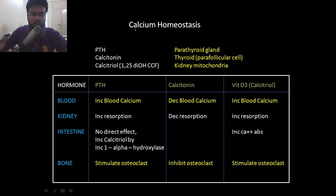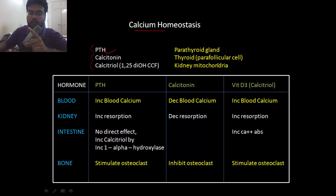Next is calcium homeostasis. Here are the hormones and their sources of secretion: parathyroid hormone from the parathyroid gland, calcitonin from the parafollicular cells of the thyroid, and calcitriol — the active form of vitamin D — from the kidney.